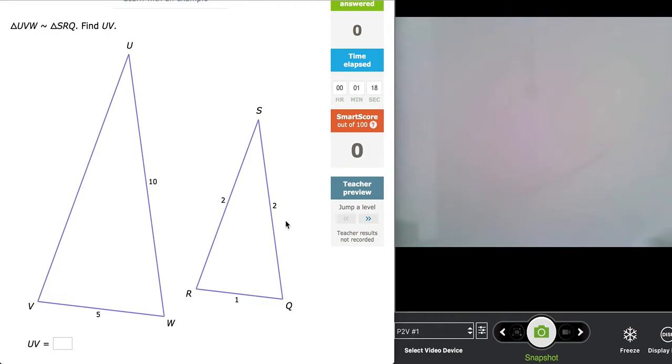if SQ, which is two, is proportional with UW when relating these two triangles, then that means if this is a two as well, this must also be ten, as this is ten. So the one corresponds to this five, the two relates to the ten rather, and this two would relate to the missing ten.